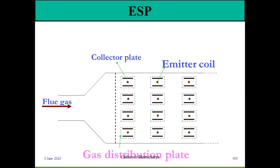The layout of the collector plates and emitter coils shows the fields in the ESP. Flue gas enters through the gas distribution plate and is stratified across the various fields. The collector plates and emitter electrodes are placed in this pattern, with continuous charging of ash particles, collection of ash particles, and shifting of ash particles to the bottom hoppers for disposal.